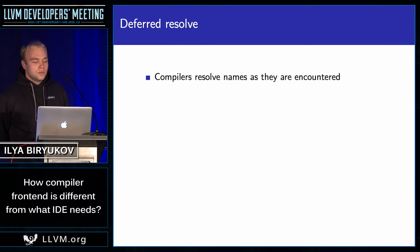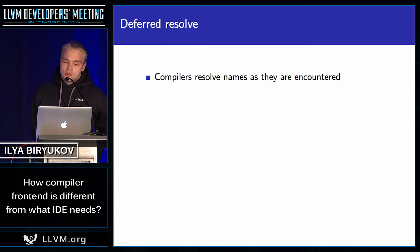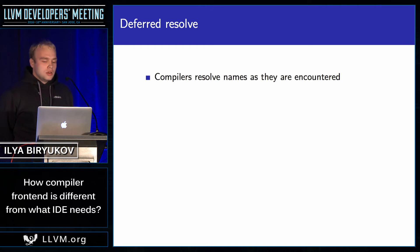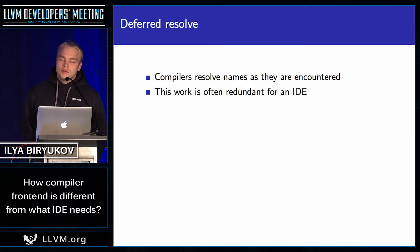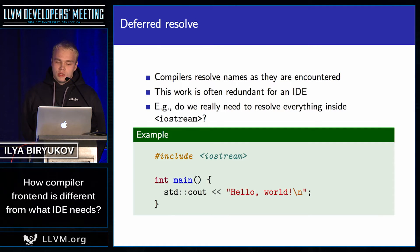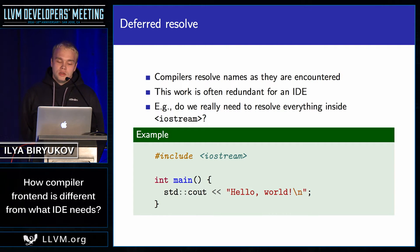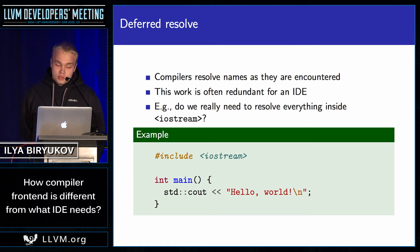The first feature comes from this observation: compilers resolve names all the time as soon as they encounter them, and this work is often redundant for an IDE. Just imagine how much stuff has been resolved when you just include the iostream header in a hello world application. You only ever asked for three things: the std namespace, the cout global variable, and the stream insertion operator. But there's a whole bunch of stuff that was resolved and you didn't want.